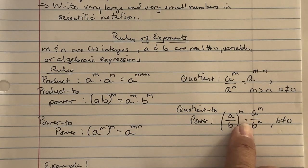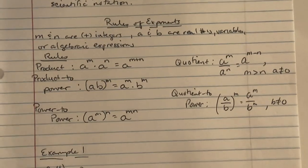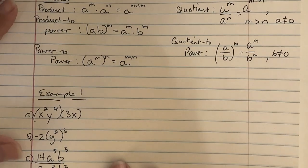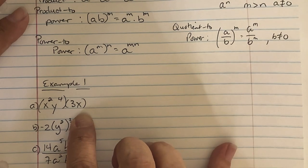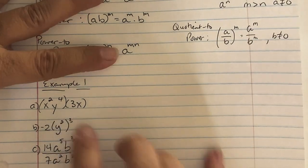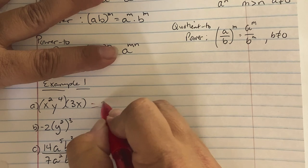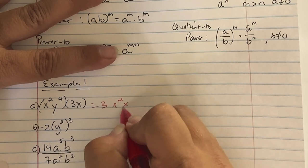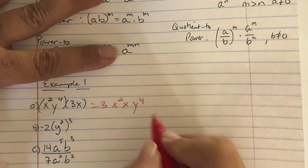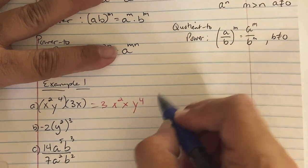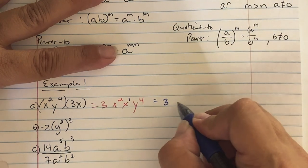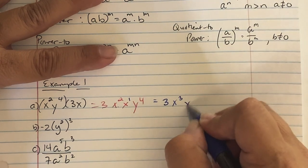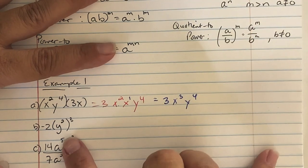In Example 1, we have (x squared y to the fourth) times (3x). We group our terms together: the 3 by itself, then x squared with another x, and then y to the fourth. Combining: 3 is the only number, there are two plus one, so three x's total, and y to the fourth. The result is 3x cubed y to the fourth.